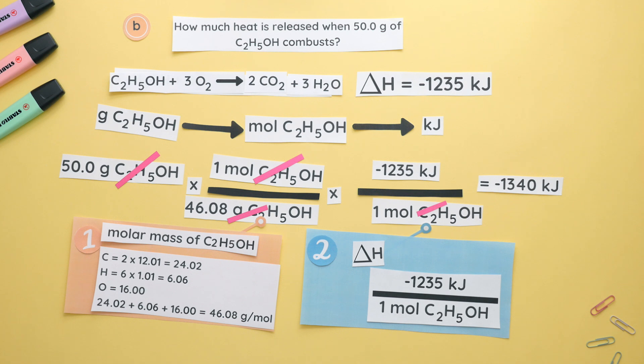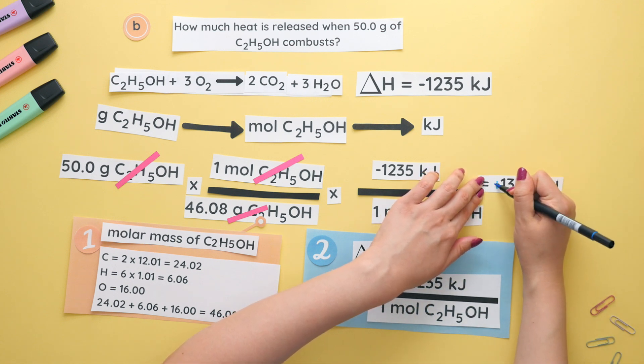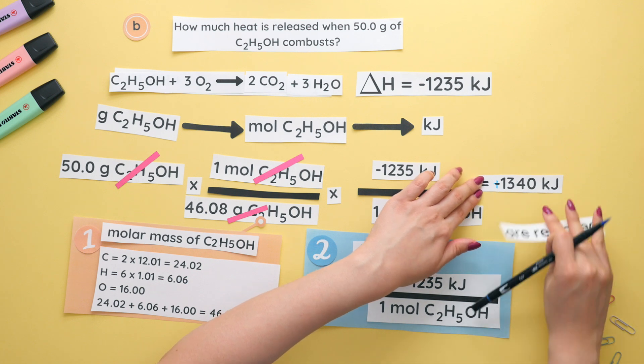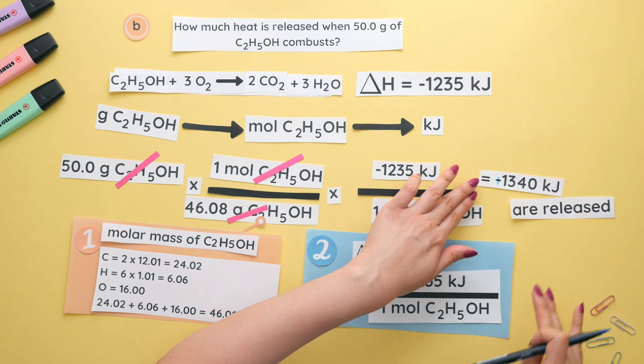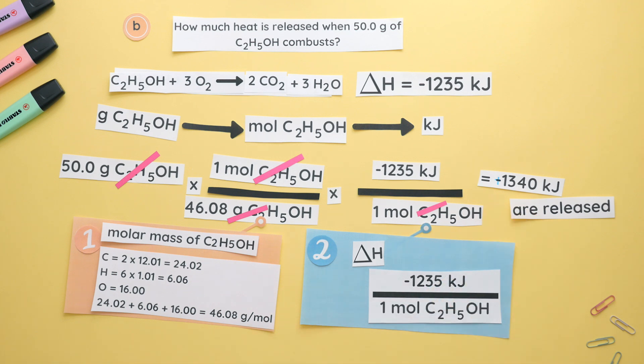There are two different ways you can write your answer. The first answer is with a negative sign because heat is released. We could have also written our answer as positive 1,340 kilojoules is released. And the fact that we said released, that accounts for the negative so we don't have to put it.